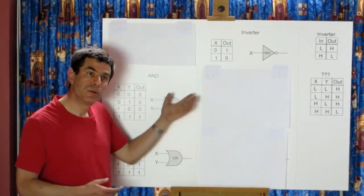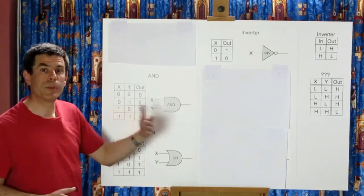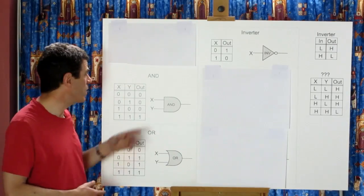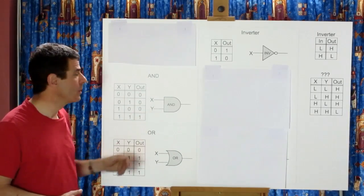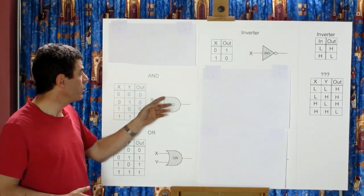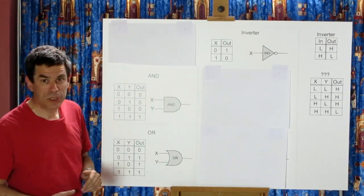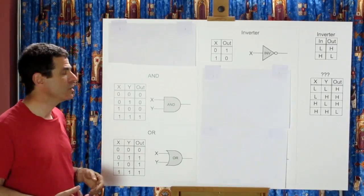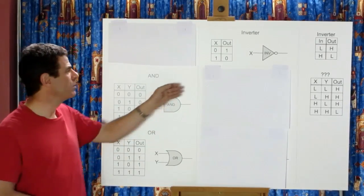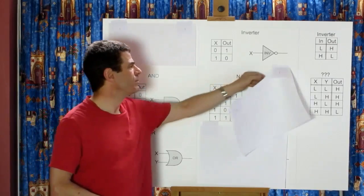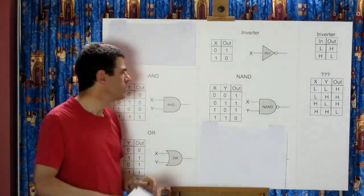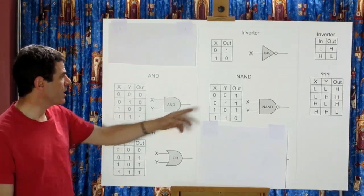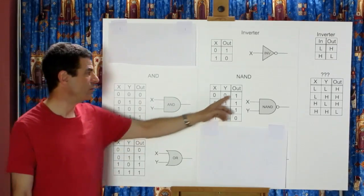Now each function we can define here has a complementary version of it where we invert the outputs. So if we wanted to get the complementary version of AND it would be the NOT AND function which we normally abbreviate to NAND and that looks like this. So the tables are the same but the output column has been inverted.